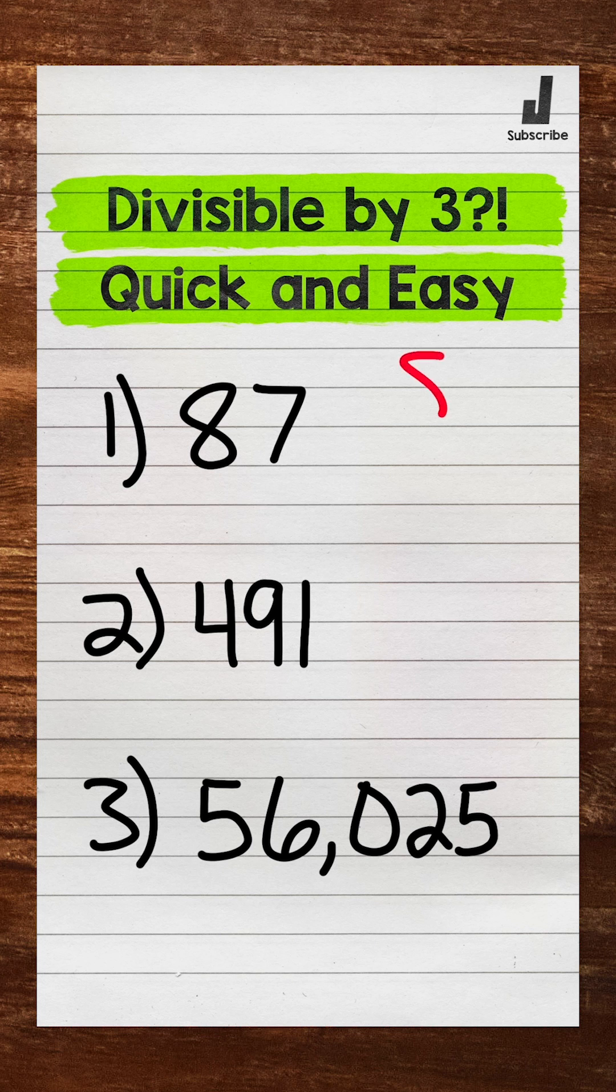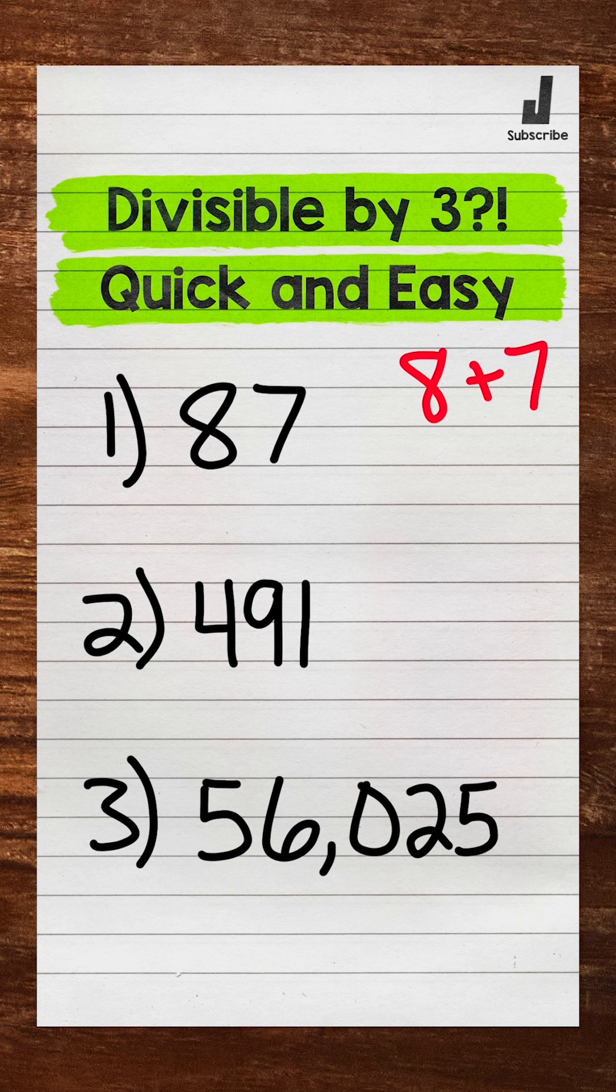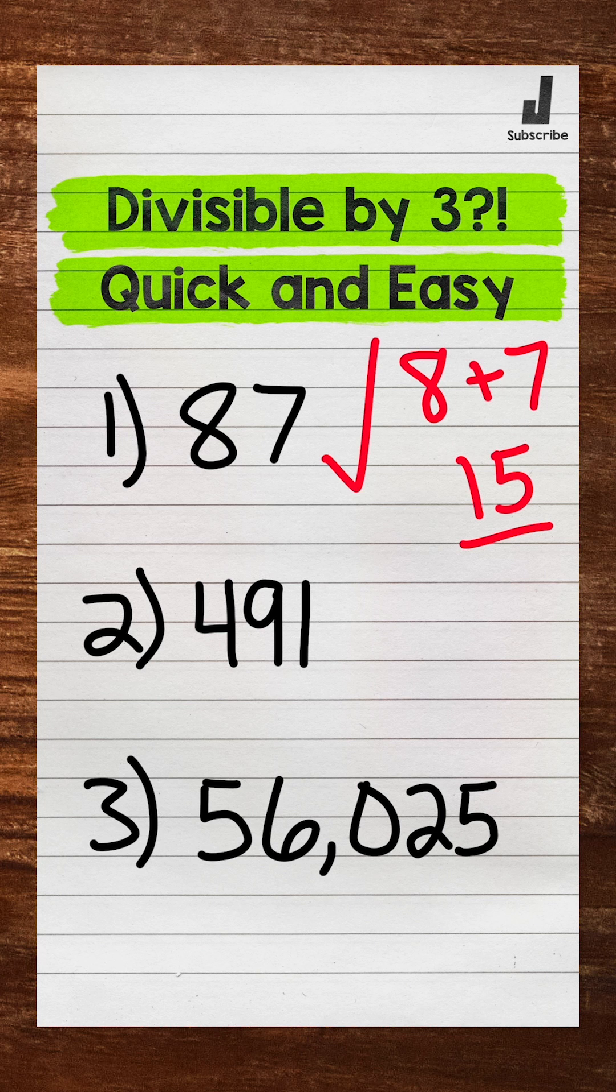So for 87, we have an 8 and a 7. 8 plus 7 is 15. Is 15 divisible by 3? Yes, so 87 is divisible by 3.